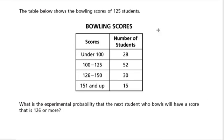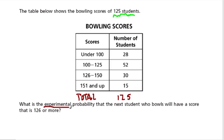In this problem we have a table showing the bowling scores of 125 students — that's the total for all of them. What do they want to know? What is the experimental probability that the next student who bowls will have a score that is 126 or more?